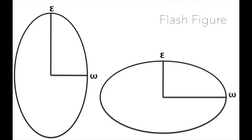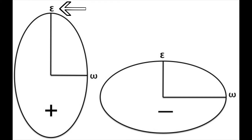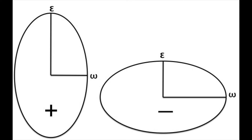For uniaxial minerals, finding a flash figure lets us know that we are looking at a slice of the ellipsoid that looks down at an epsilon-omega section. It is important to note that epsilon and omega change depending on optic sign. In a uniaxial positive mineral, epsilon is the slow ray. In a uniaxial negative mineral, epsilon is the fast ray.